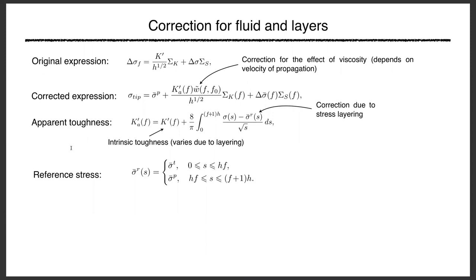Everything so far assumed toughness-dominated solution — no fluid viscosity effect, no thin layers within an element. For these two cases we need corrections. The viscosity effect is captured by an additional apparent toughness term that depends on tip propagation velocity (from fill ratio at current vs. previous time step) and material properties like viscosity. For toughness layering, you always use the local value of fracture toughness based on the current fill ratio, since you always know where your fracture front is.